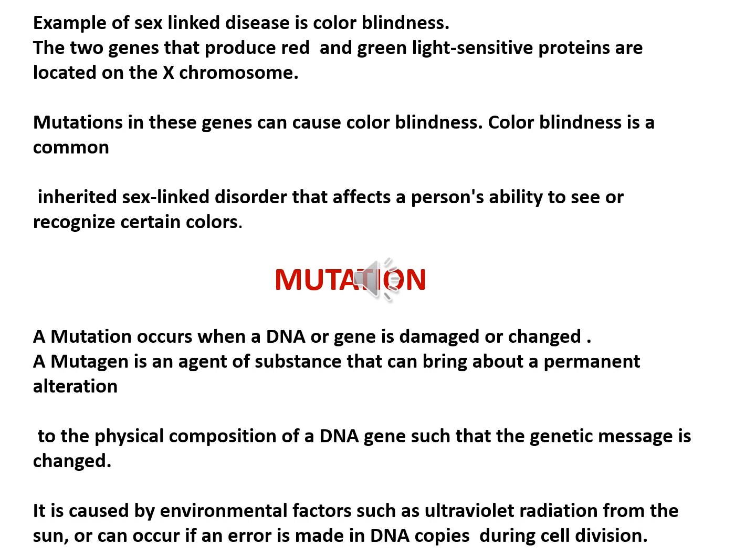Now we will learn the third term of this chapter: mutation. What is mutation? It occurs when a DNA or a gene is damaged or changed. A mutagen means the cause of mutation — it can be an agent or substance that brings a permanent change or alteration to the physical component of DNA. Mutation can be caused by environmental factors such as ultraviolet radiation from the sun, or can occur if there is any error or mistake during DNA copying in cell division.